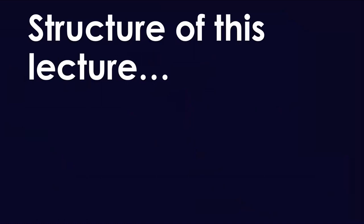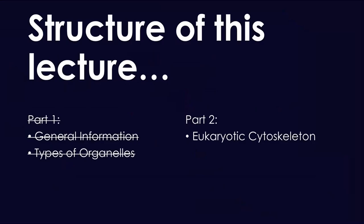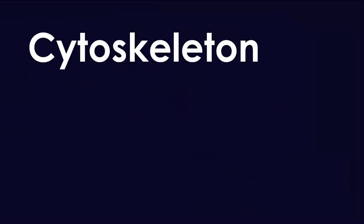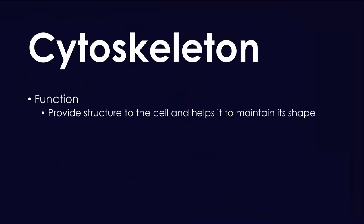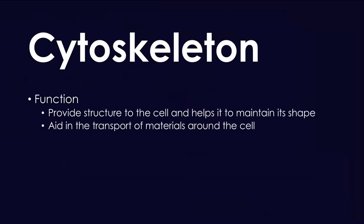With that being said, let's talk about the structure of this lecture. Today we're going to be discussing the cytoskeleton as well as the high yield facts and questions. The function of the cytoskeleton is to provide structure to the cell and help maintain its shape. It aids in the transport of materials around the cell, and you have three main components.